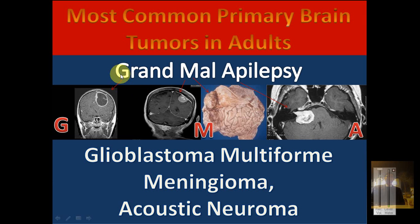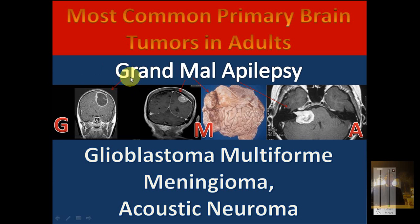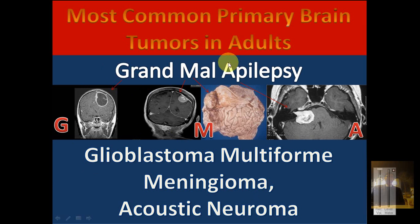I made a mnemonic to remember the most common adult brain tumors: Grand Mal Epilepsy. G is for Glioblastoma multiforme, M is for Meningioma, and A is for Acoustic neuroma — note that the E has been replaced with A.